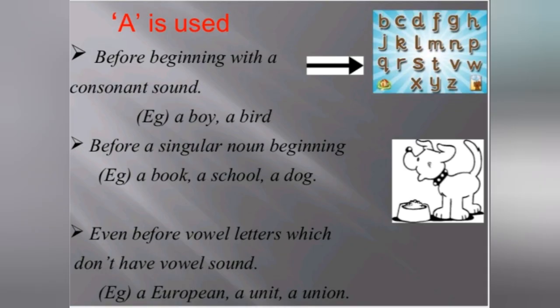A is used before a singular noun starting with a consonant sound. For example: a boy, a bird, a book, a school, a dog.